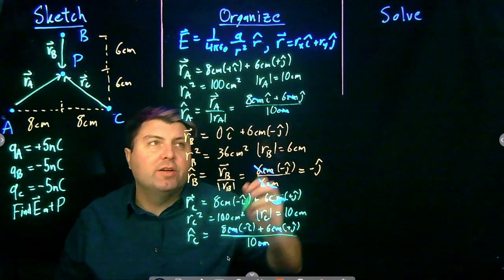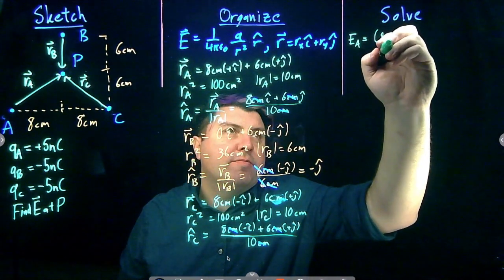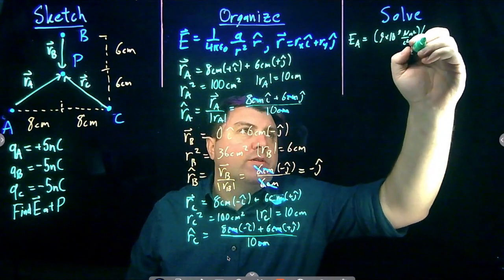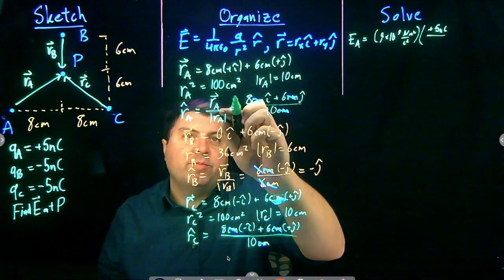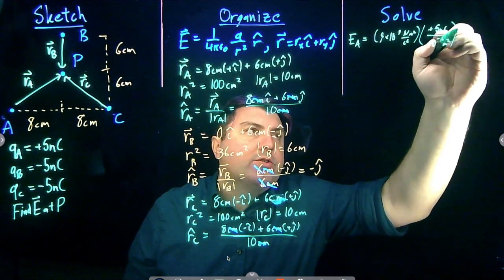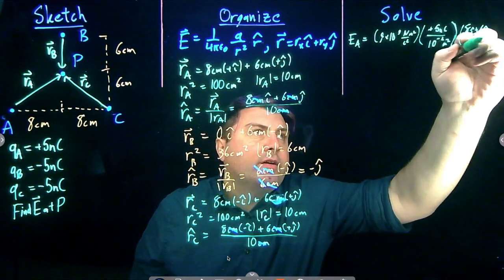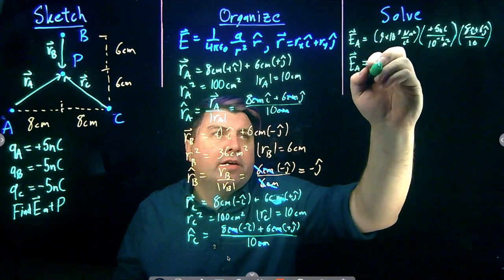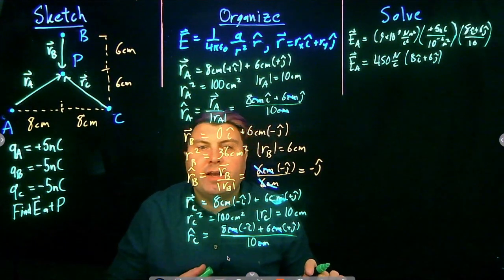Now I can go through the solve step. The electric field from A equals K times Q over R squared times R̂_A. K is 9×10⁹ N·m²/C², the charge is +5 nanocoulombs, and R² is 100 cm² which converts to 10⁻² m². Multiplying through, E_A equals 450 N/C times (8î + 6ĵ).